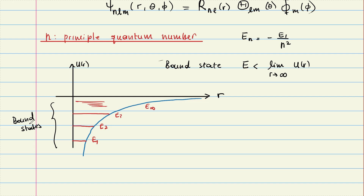These are all bound states, meaning the electron is bound to the Coulomb potential. Since we put the proton at the center of the coordinate system, the electron is circling around. We could consider scattering states, but this is rarely taught at this level.